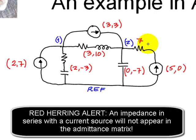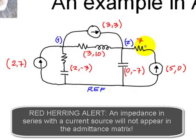Here you have a red herring. This 7 ohms resistor in series with its current source, you know that that is not going to be part of the KCL equations. You know that you should not include this in your matrix.